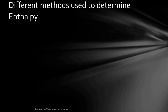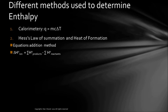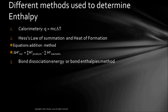Here are the different methods you may have used to determine enthalpy changes. First, calorimetry, where Q = mcΔT. Second, Hess's law of summation of heat or heat of formation data, using the equation addition method where ΔH° reaction equals products minus reactants. The third method, which we are talking about today, is the bond dissociation energy or bond enthalpy method, where ΔH° reaction equals the sum of bond energies of reactants minus bond energies of products, with all values assigned positive signs.